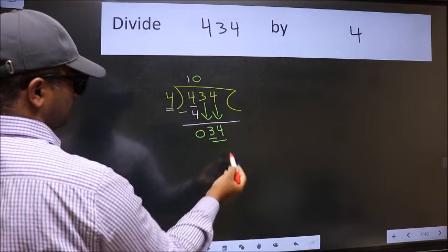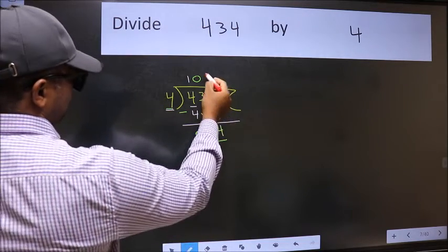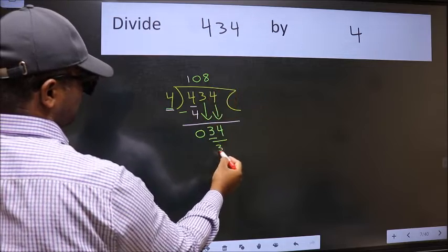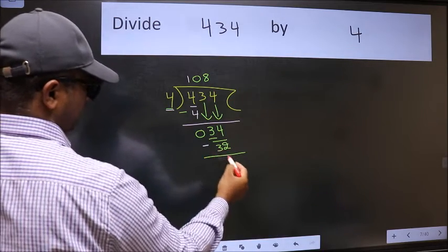Then only we can bring this number down. Now 34. A number close to 34 in the 4 table is 4 eights, 32. Now we should subtract.